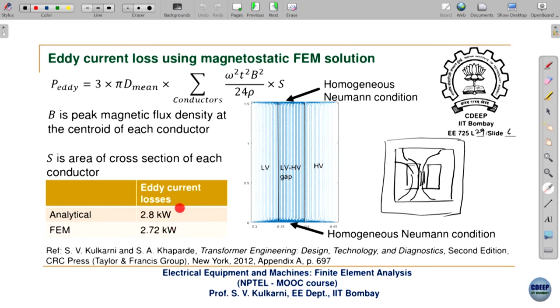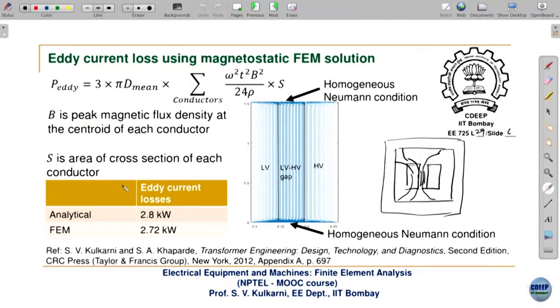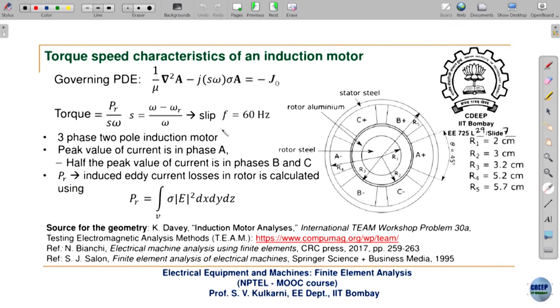Here S is the cross-sectional area of each conductor. More details on the transformer design are available in the referenced book's Appendix A. We will stop here and continue in the next lecture.